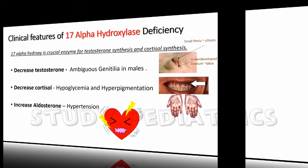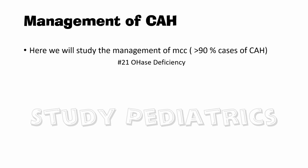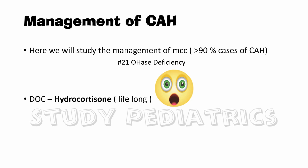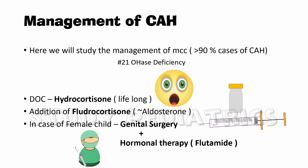Now let's see how we can manage a patient with CAH. We will study the management of the most common cause — more than 90% of CAH cases — which is 21-hydroxylase deficiency. The drug of choice is hydrocortisone, given lifelong, with addition of fludrocortisone, which is an aldosterone agonist. In the case of a female child, we do genital surgery plus hormonal therapy, like flutamide.